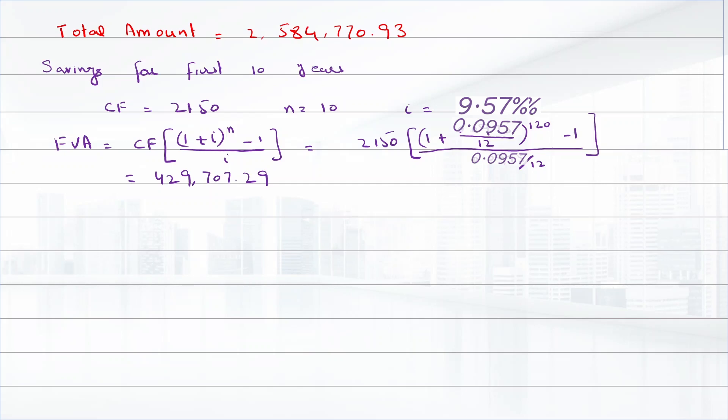After 10 years he will purchase the cabin. So the amount left after purchasing the cabin is $429,707.29 minus $375,000, which is the price of the cabin. The remaining amount will be $54,707.29.